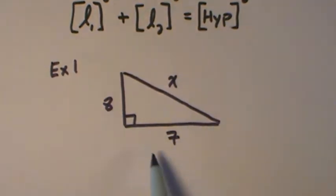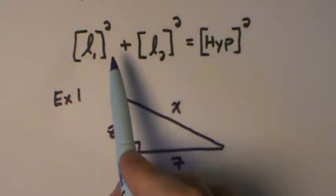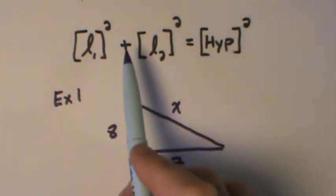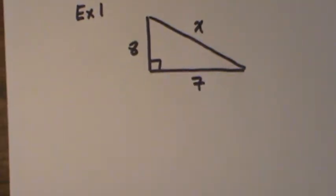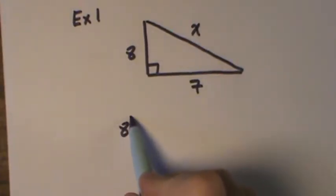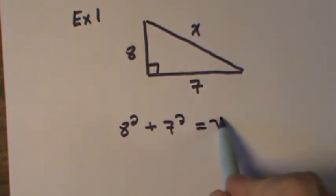You're going to take each of your legs, square them, and add them together. Looking at the formula at the top, it says L1² + L2² = hypotenuse². I have two legs, so I'll take 8² + 7² and set that equal to X².